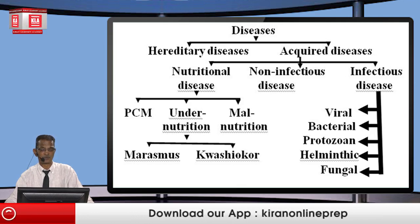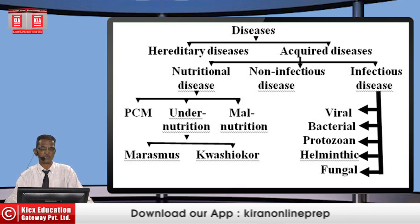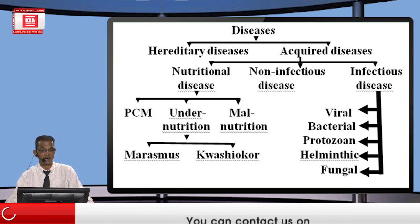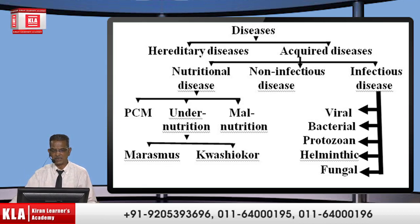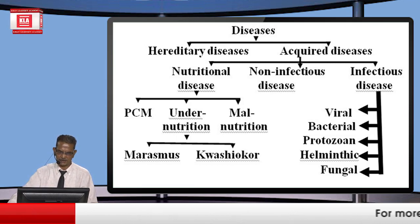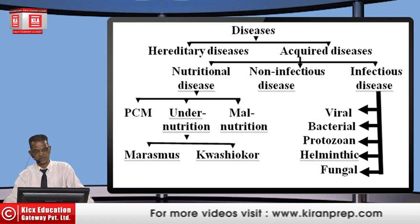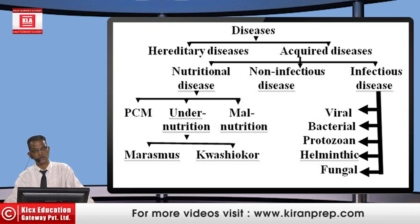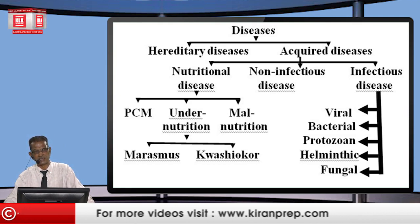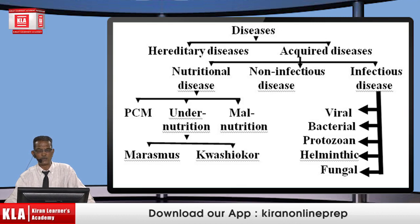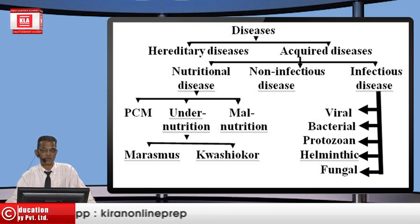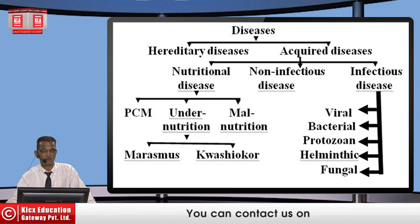Then comes the category of acquired diseases — diseases a child obtains or ends up suffering from after birth. These have been further classified into three categories: nutritional diseases, non-infectious diseases, and infectious diseases. Nutritional diseases are directly related to nutrition — what we are eating — whose major parts are carbohydrates, fats, proteins, minerals, and vitamins.